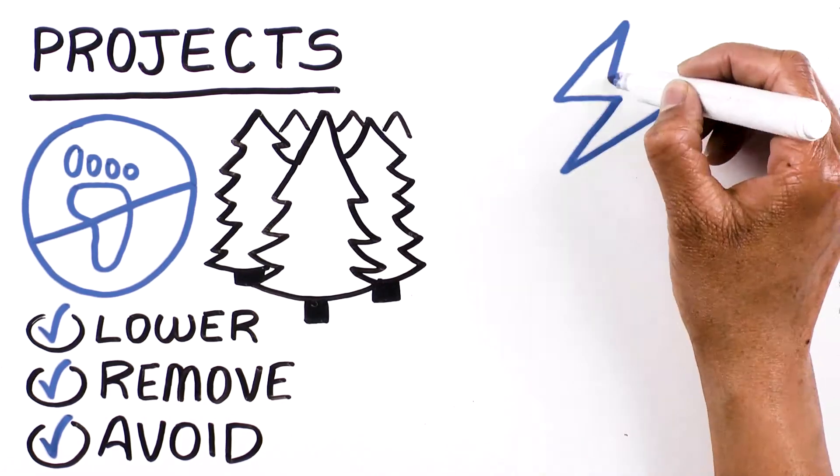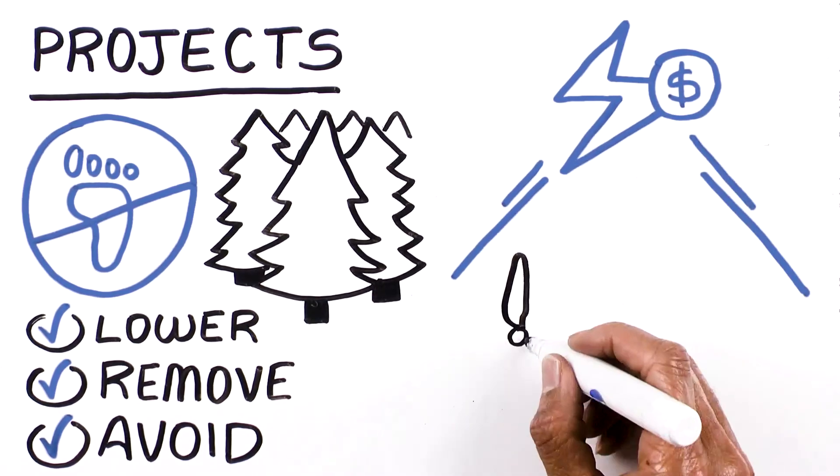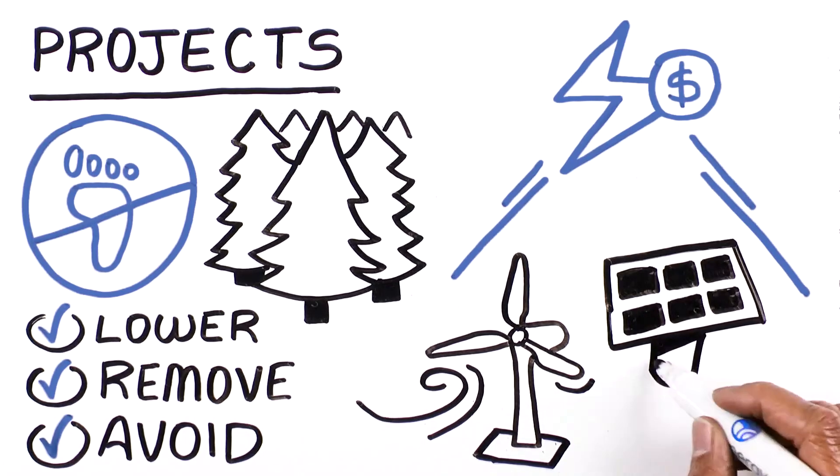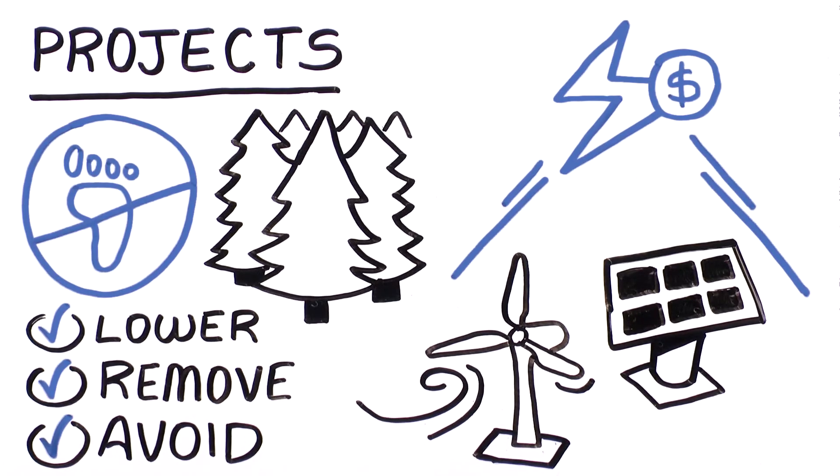On the other hand, RECs can only come from renewable electricity sources, such as wind or solar. They can be purchased for future generation projects as well.